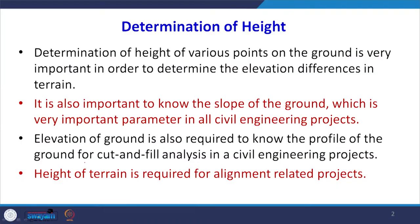Whenever we are designing an alignment — such as a railway line or highway alignment — height plays a very important role between two points. That is why we are determining height from photogrammetric methods. There are different approaches by which we can determine the height of objects.